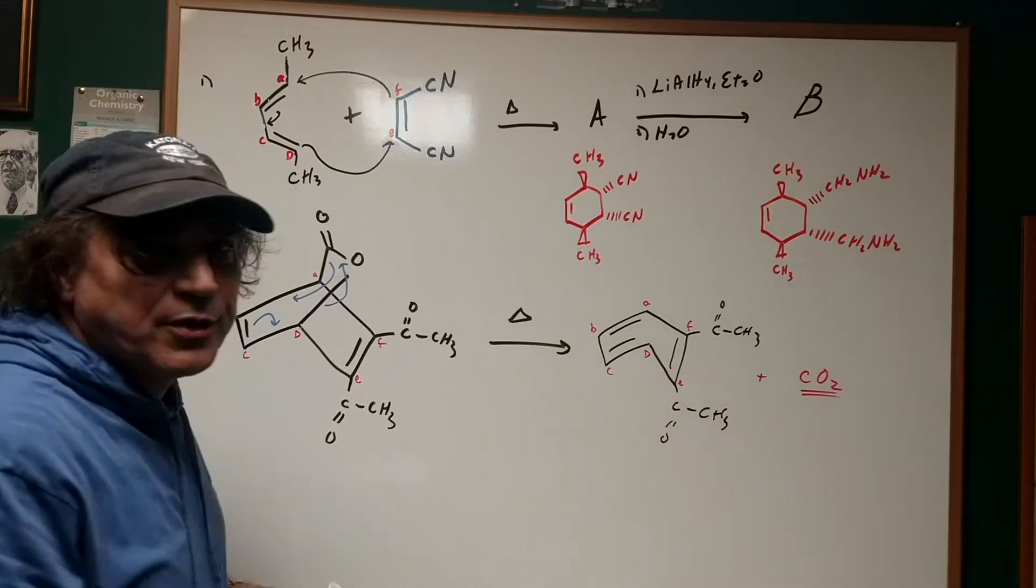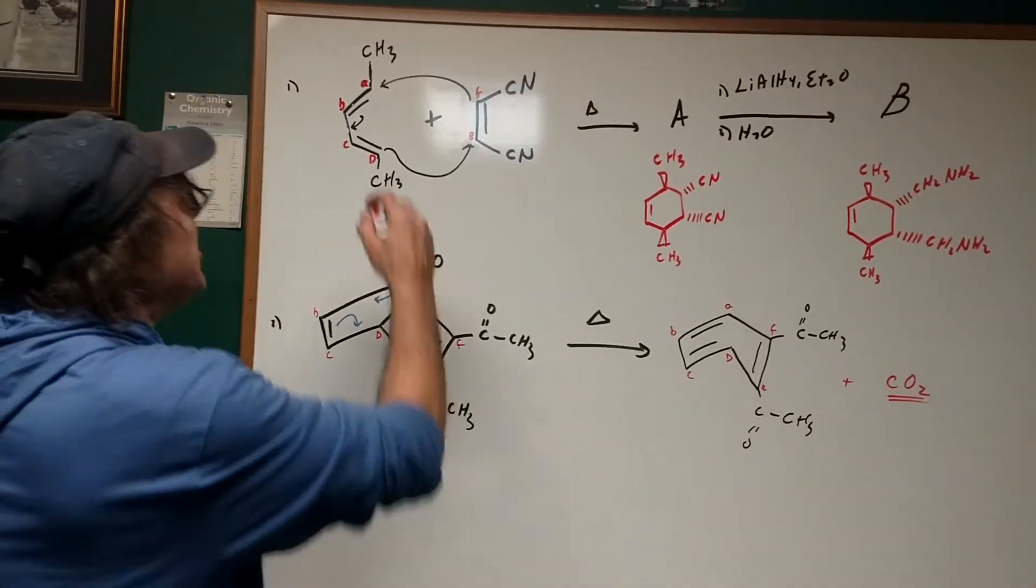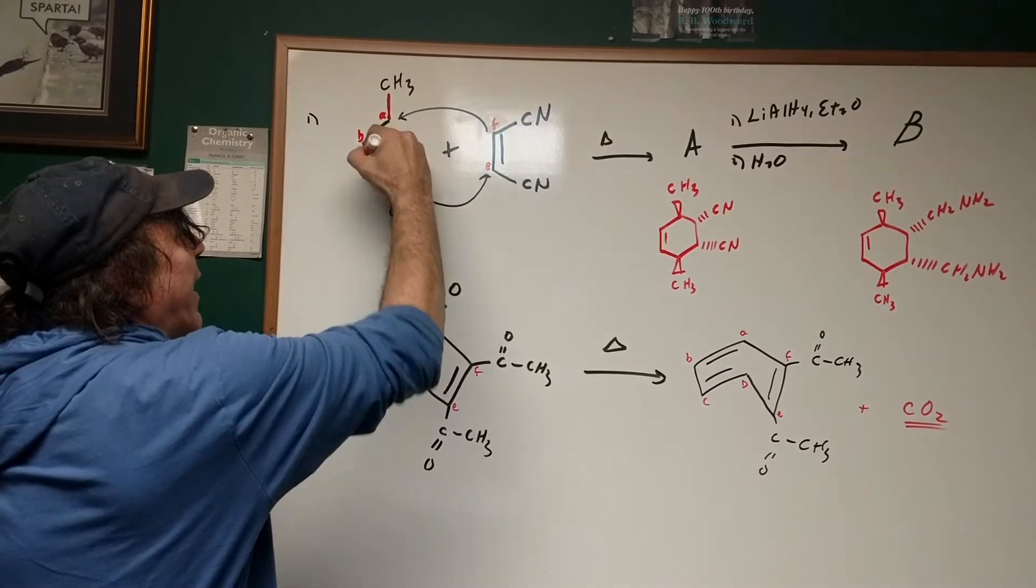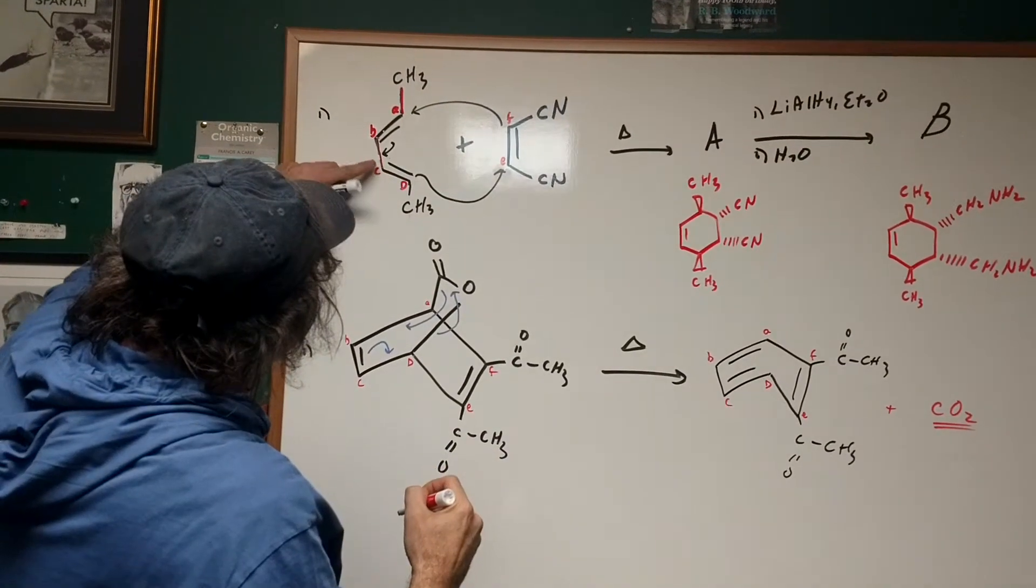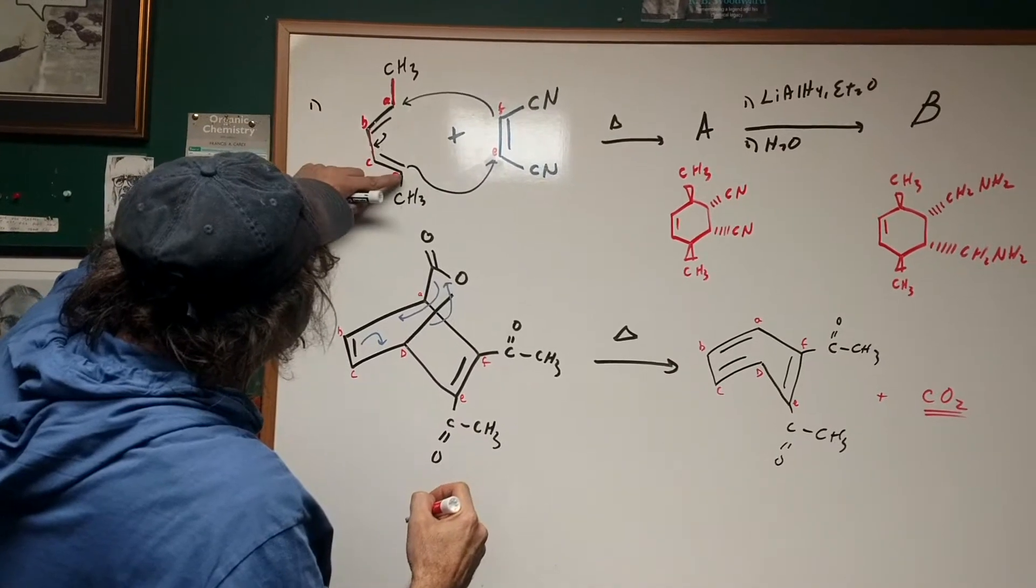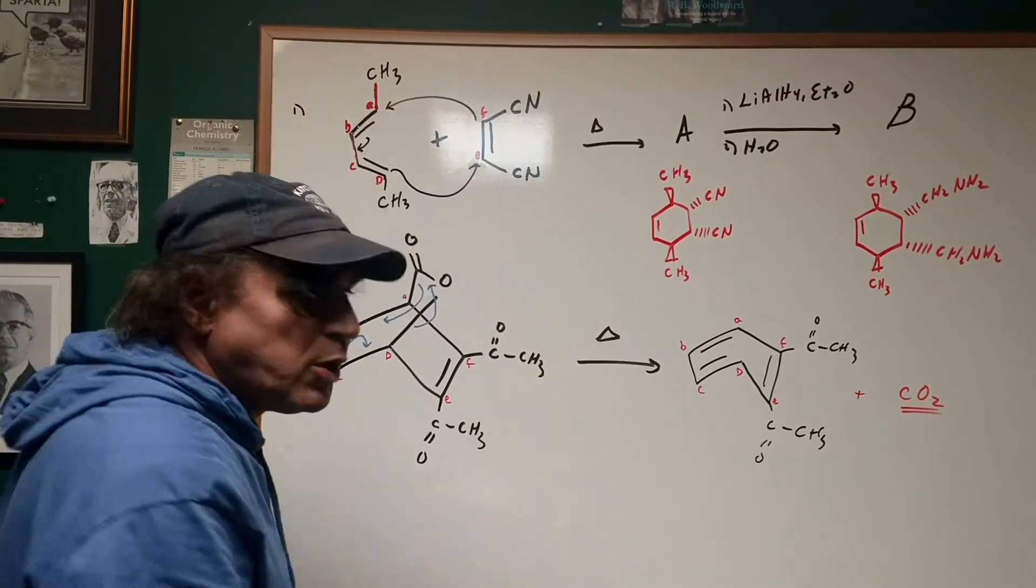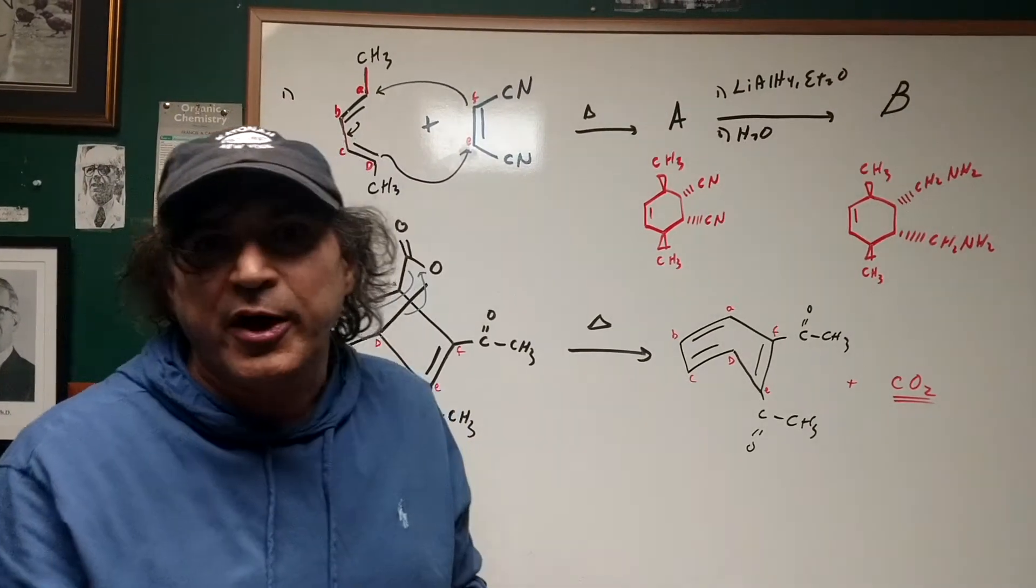We've got to be careful of the stereochemistry here. As you can see, this double bond, this bond goes up and this bond goes down. The same thing, if you look at this double bond, one bond goes up and this bond goes down. That means the two methyl groups are going to have the same configuration.